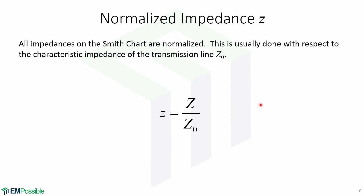In order to use the Smith chart, we need to normalize the impedance. This is usually done with respect to the characteristic impedance on the transmission line Z0. So the normalized impedance is equal to lowercase z, which is given by the impedance Z over the transmission line impedance Z0.